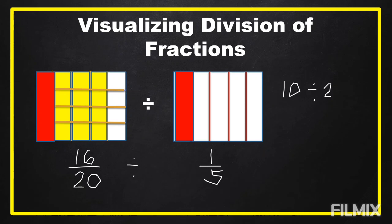Let's look at the example: 10 divided by 2. In a division sentence, 10 is the dividend and 2 is the divisor, and the answer is called the quotient. So how many twos are there in 10? Let's illustrate.